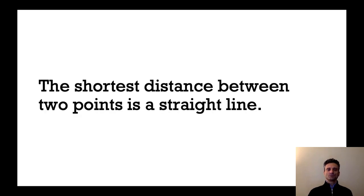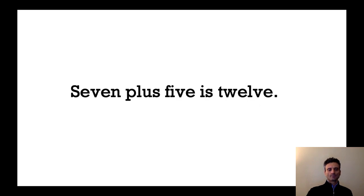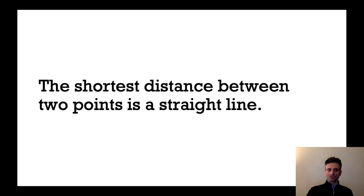The shortest distance between two points is a straight line. In this case, we have to measure — we have to take a straight line and discover that the shortest distance between two points is a straight line. So this is an example of a synthetic statement, and it's not known a priori — it's known a posteriori.